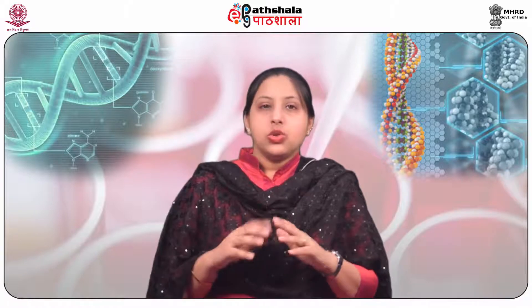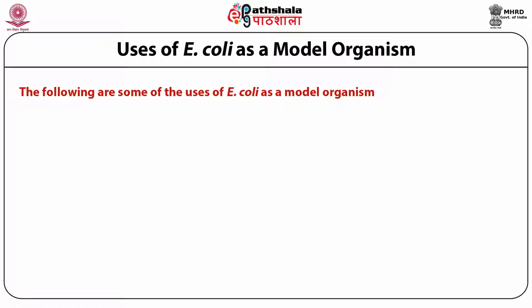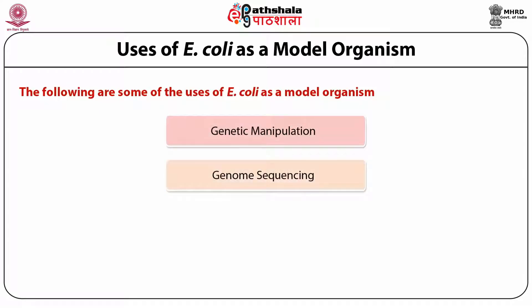The genome of E. coli is well studied and was published in 1997. Because so many E. coli strains have had their genomes sequenced, a comparative genomic analysis of genes across different strains can be easily done. Comparing gene sequences gives clues to the function of genes, their relative importance, and the changes they have undergone over time. E. coli is greatly used in genetic manipulation, genome sequencing, and genetics.